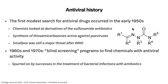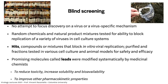The first searches for drugs to inhibit viruses started in the 1950s, following the explosion of antimicrobials after penicillin and sulfonamides. People began synthesizing drugs like thiosemicarbazones, active against pox viruses. It wasn't until the 1960s and 70s that efforts increased through blind screening programs — massively screening collections of chemicals to find things that inhibit viruses. Blind screening means there's no focus on a particular protein; you take a virus and see if something inhibits its growth in cell culture, then figure out the target.